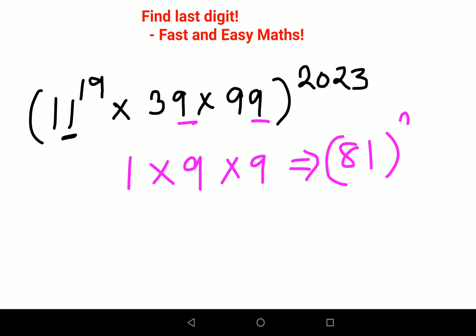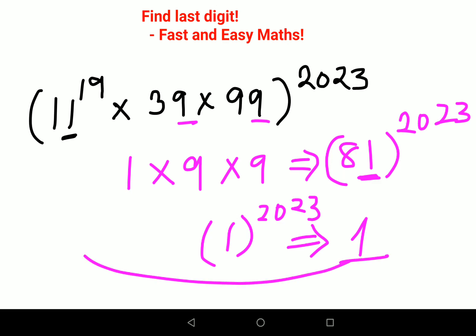And the whole raised to 2023. Now any number which has a last digit as 1 will always have 1 raised to that power. And we know that 1 raised to any power is always going to be 1. So the answer for this one is just 1.